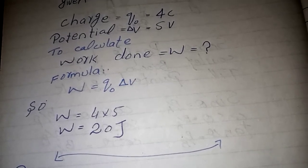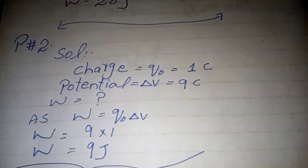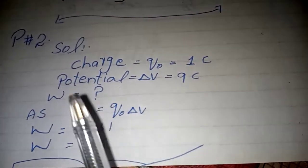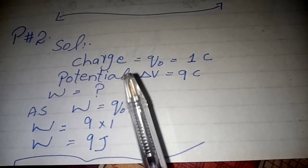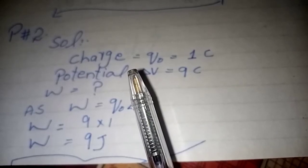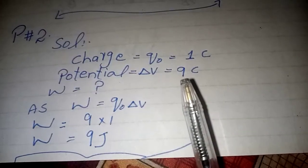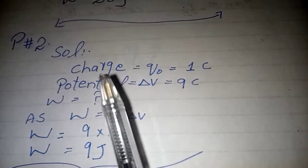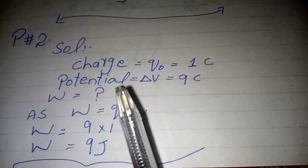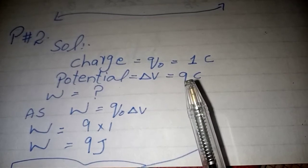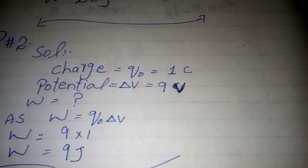Here is our first problem. Next is problem number two, almost the same. Here we have to calculate how much work is done on a charge of 1 coulomb when potential is 9 volts. So here we have charge given as 1 coulomb and potential applied as 9 volts.